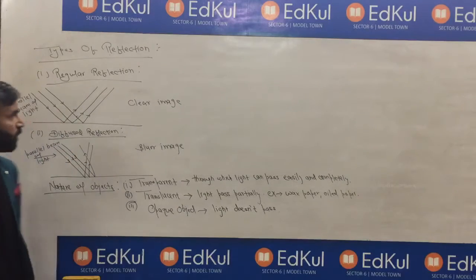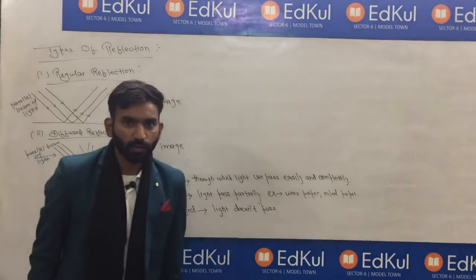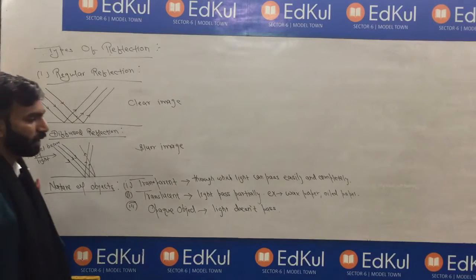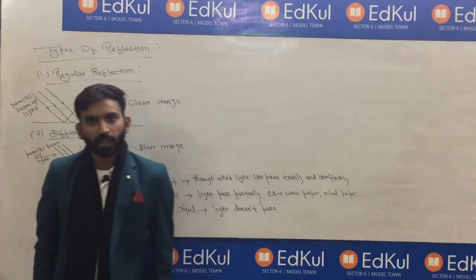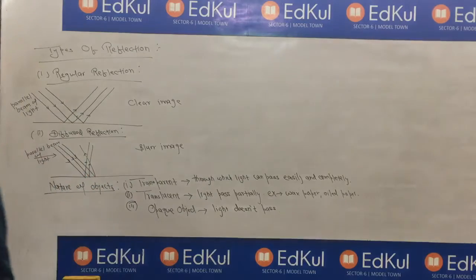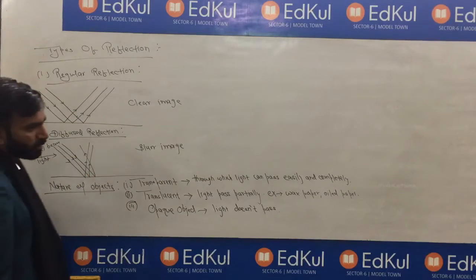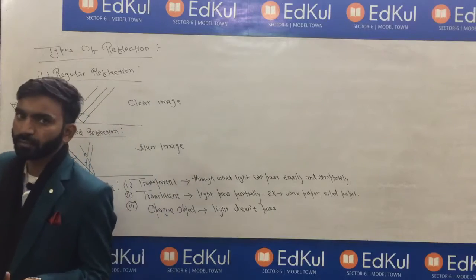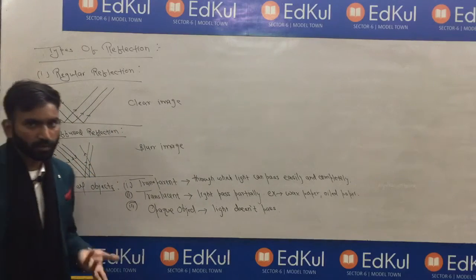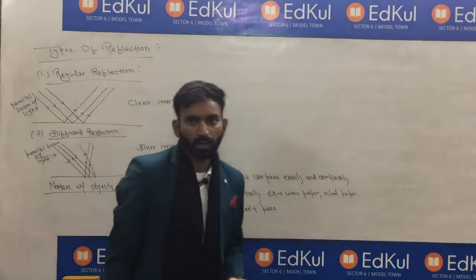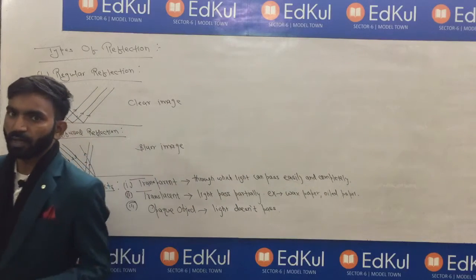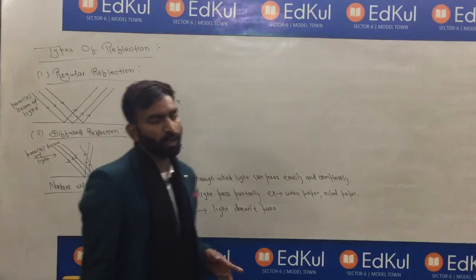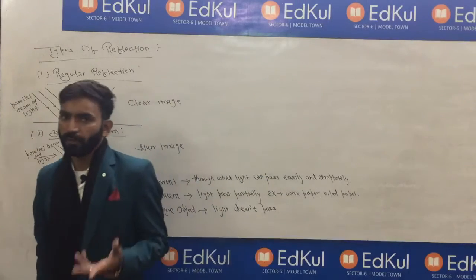Moving on to the third part from the chapter Light, we will discuss types of reflection. Till now we have discussed what is light, characteristics of light, luminous or non-luminous objects. Then we discussed what is reflection, a few terms related with reflection — what is incident ray, what is reflected ray, what is normal ray, what is angle of incidence, angle of reflection, and laws of reflection.